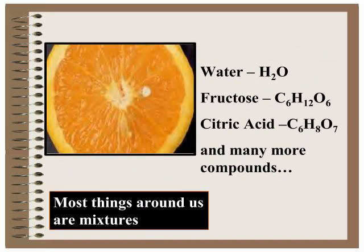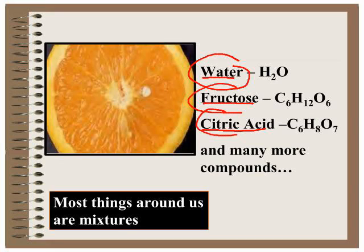A mixture is many different pure substances, usually compounds, could be elements that are physically combined. In this orange, you could remove the water, the fructose, and the citric acid from each other using physical means. You can see by looking at this orange, there are many different parts that have different properties: the seed versus the pulp versus the peel and so on. Most things around us are mixtures.